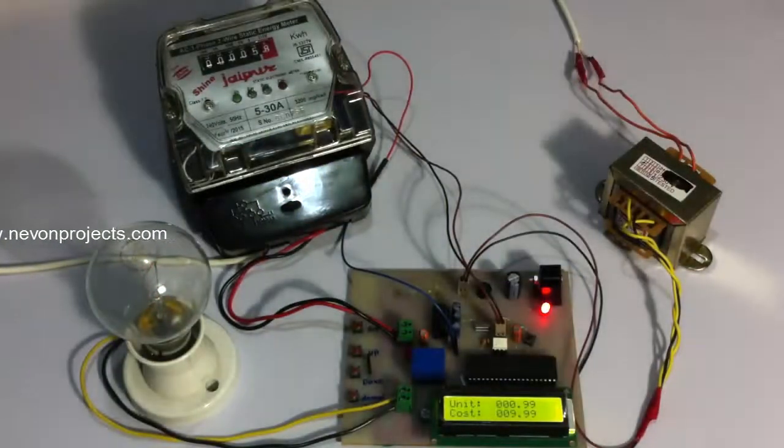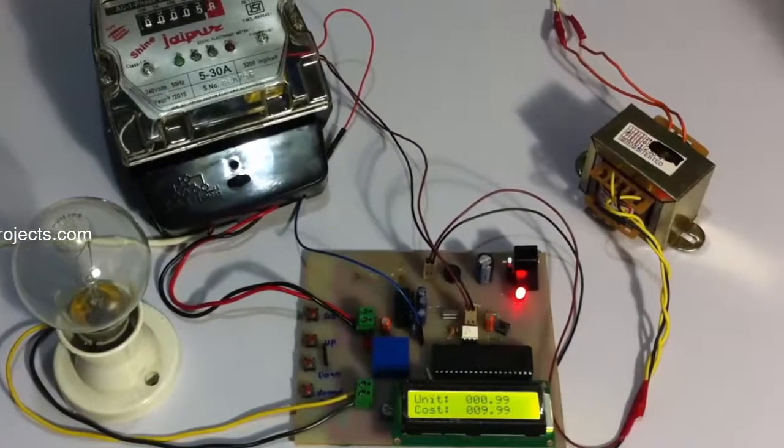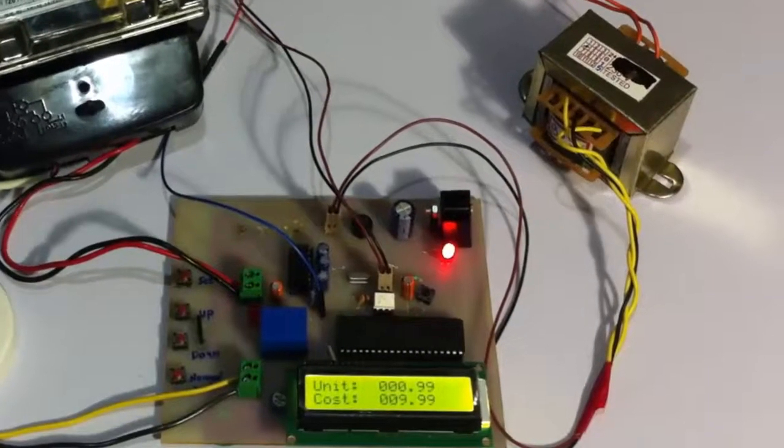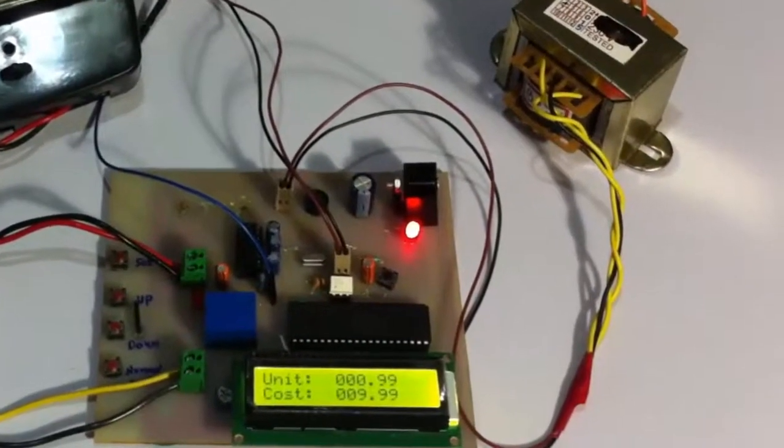So now it has displayed that the units consumed is 0.99 and the cost incurred is 9.99 which is approximately 1 unit and 10 rupees.